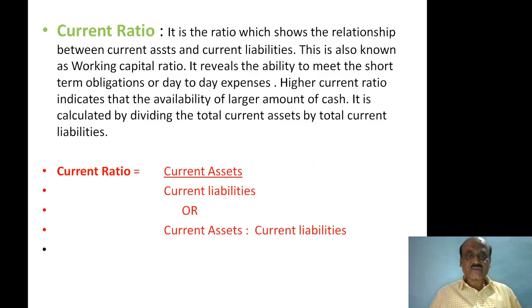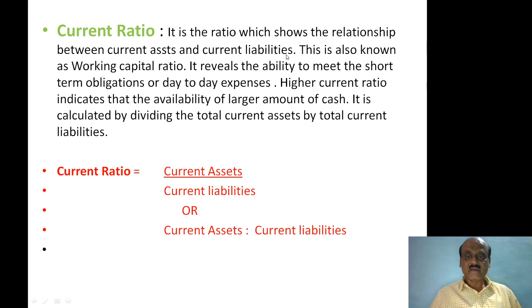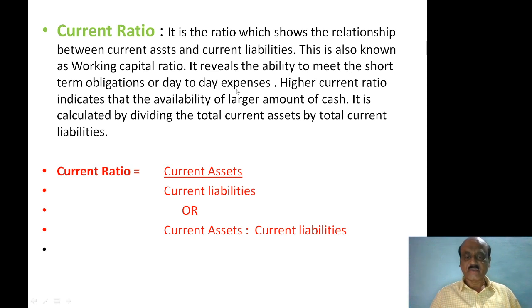Current ratio is the ratio which shows the relationship between current assets and current liabilities. This is also known as the working capital ratio. It reveals the ability to meet short-term obligations or day-to-day expenses of the concern.